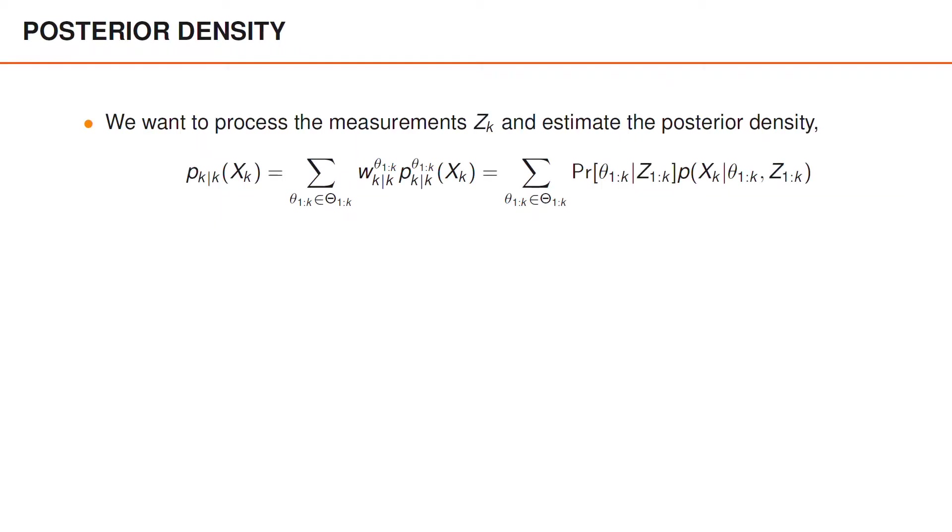We want to process the measurements and estimate the posterior density which is a mixture density that has weights or probabilities for different data association sequences and state densities conditioned on the data association sequences. So due to the rapidly increasing number of mixture components the exact posterior is intractable and we have to do approximations.